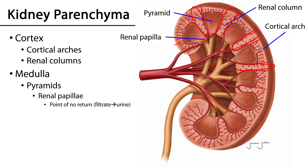Ultimately, the distal portions of collecting ducts will travel down to regions of the medulla known as the renal papillae. These renal papillae are going to be surrounded by minor calyces. These minor calyces are the proximal-most portions of the excretory pathway of urine.